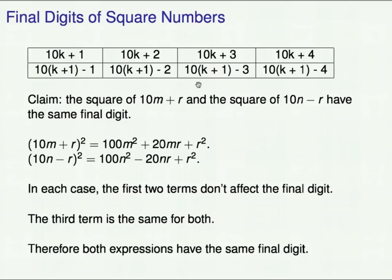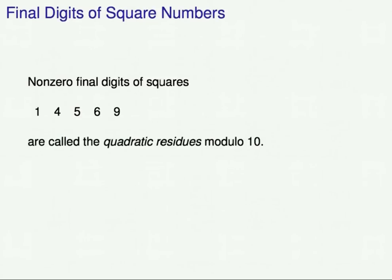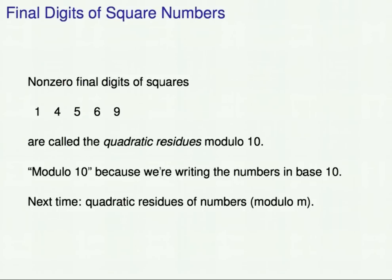We've now explained why if you take two numbers in a given column, their squares have the same final digit. The non-zero digits that can occur as final digits of square numbers are 1, 4, 5, 6, and 9 — listed in order of size. This set has a name: it's called the set of quadratic residues modulo 10. The reason modulo 10 appears is because we're writing numbers in base 10. Next time, we're going to look at final digits of squares in different bases. Thanks very much for listening.